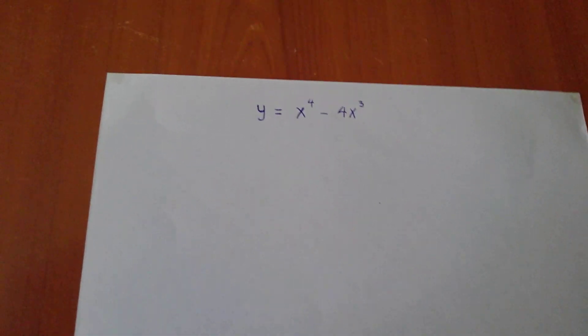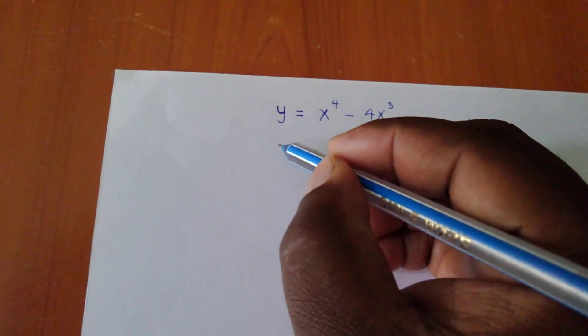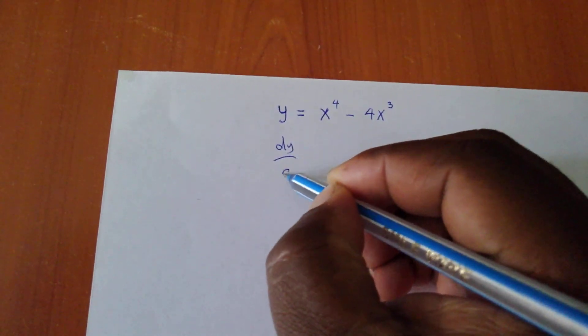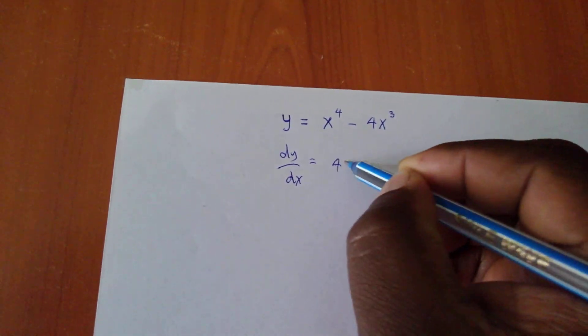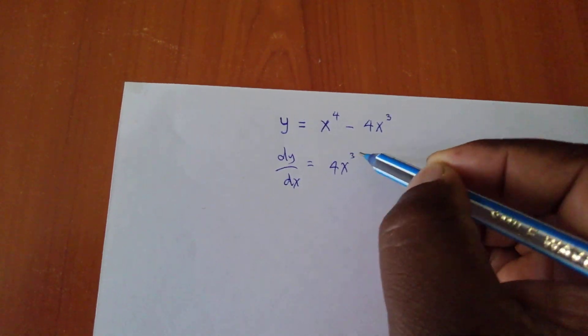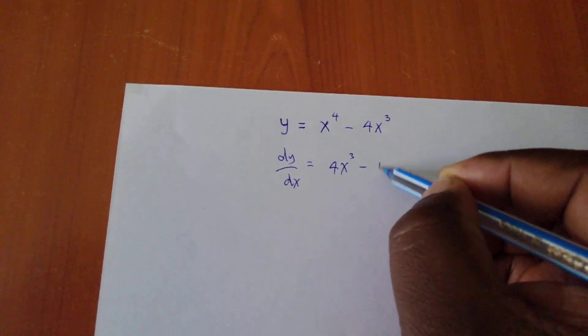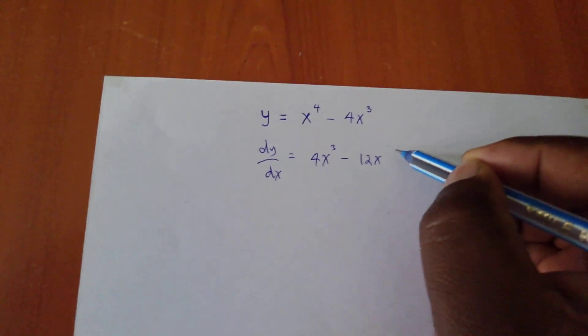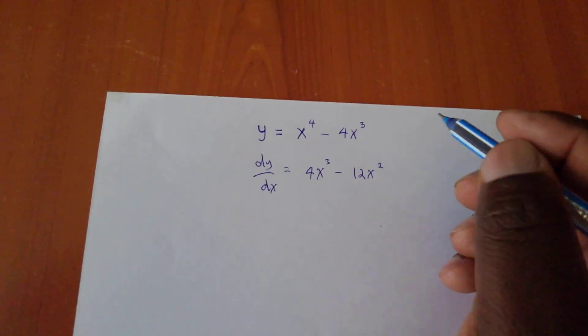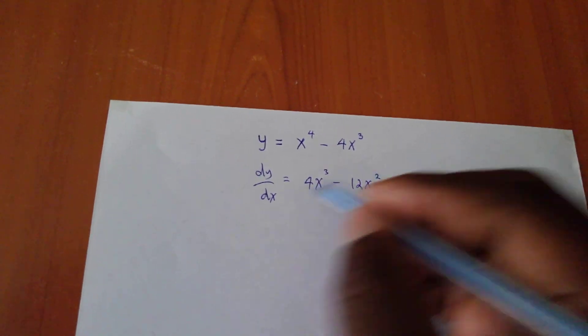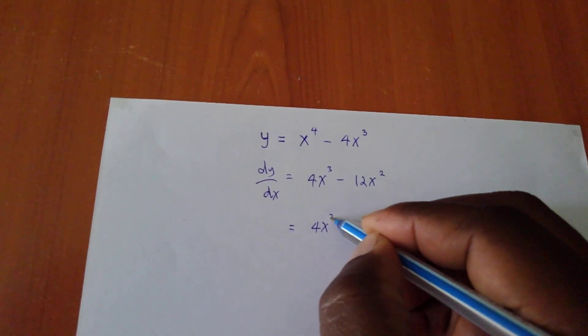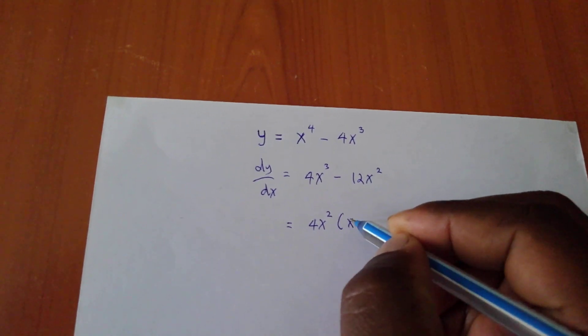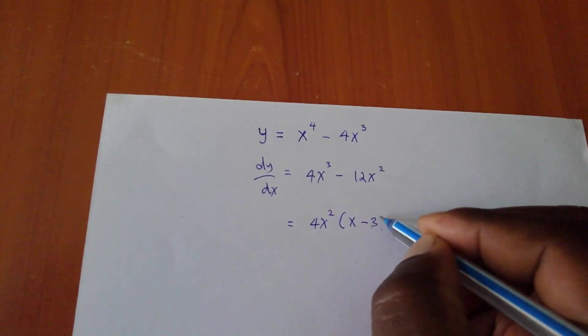Now what we are going to do, we are going to first find dy/dx, which will be 4x³ - 12x². I think you agree with that level and we can factorize this one further and we get 4x² into x - 3.